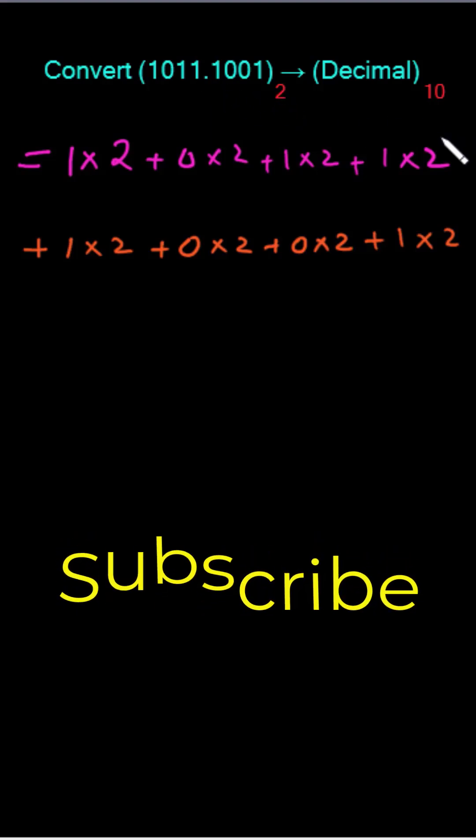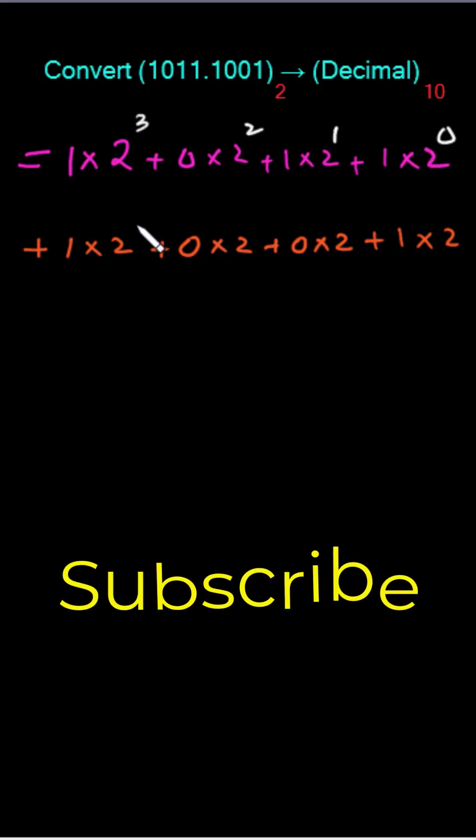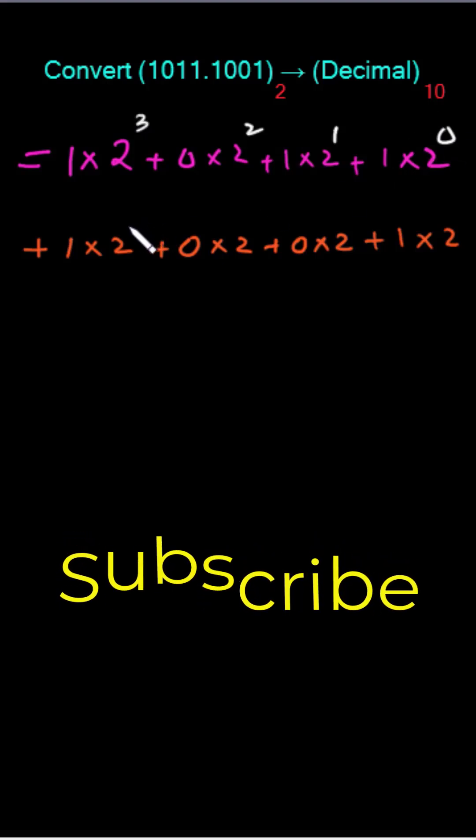So we have to start from here and then move towards the left like 0, 1, 2, 3. And on this side of zero it will get -1, -2, -3, and -4.